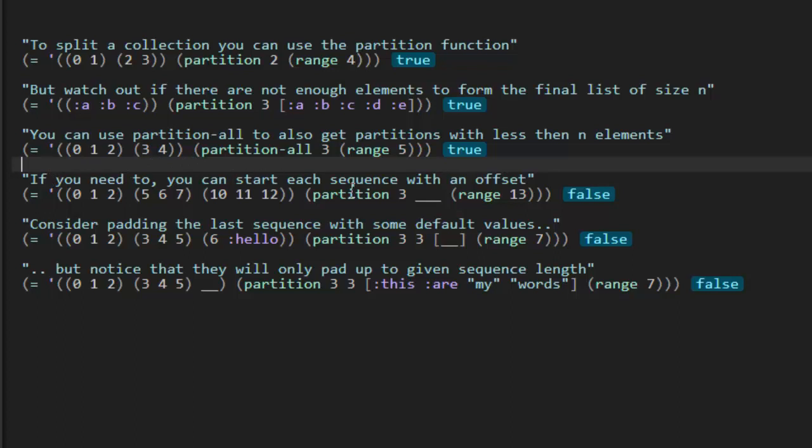So let's see. Next one. If you need to, you can start each sequence with an offset. So they call it an offset. I also call it maybe a step. So here we're calling partition with a group size as three. And then there's another parameter here we can specify. You can call it an offset or maybe a step. And then they specify the sequence that we want to partition. So here are the sequences range 13.